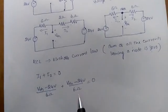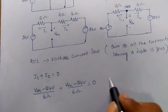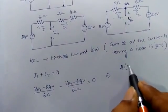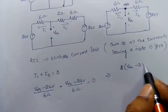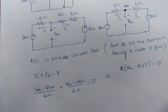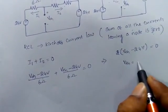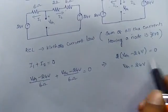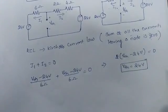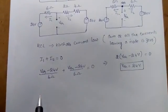Since both resistances are 6 ohms, we can add them: 2 times (V_Thevenin minus 24) equals zero. Therefore V_Thevenin equals 24 volts. Very simple — we got V_Thevenin.